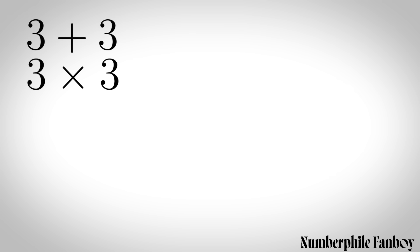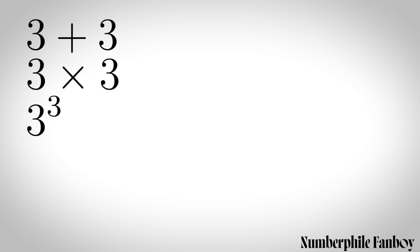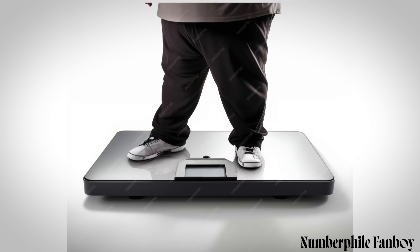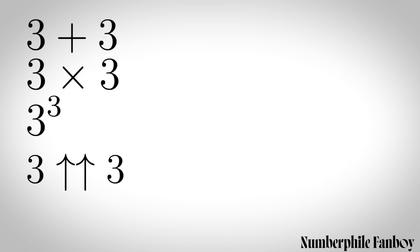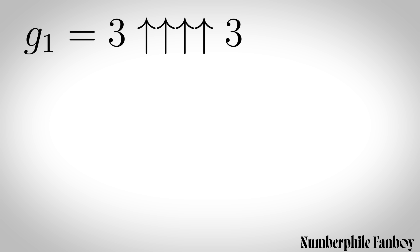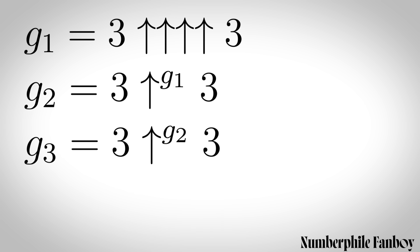For really big numbers, we can use Knuth's up-arrow notation. Three plus three, three times three, three to the power three — each operation makes it bigger. Three double-arrow three gives us three to the power three to the power three. Three quadruple-arrow three is called G1, which is already so ridiculously big it can't fit on screen. To get G2 you do the same thing but with G1 number of arrows, and you keep going all the way up to G64, which is Graham's number.